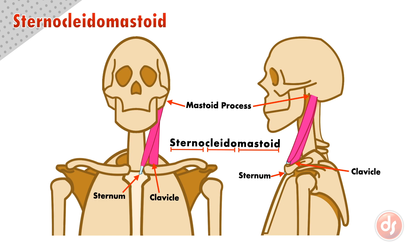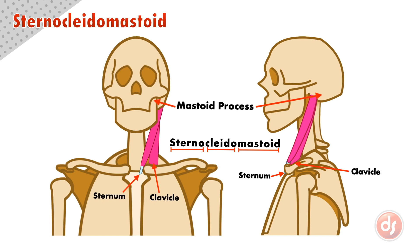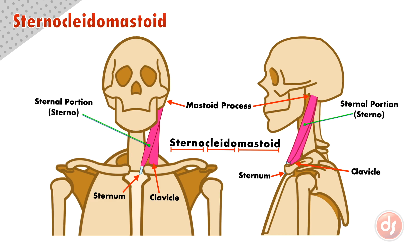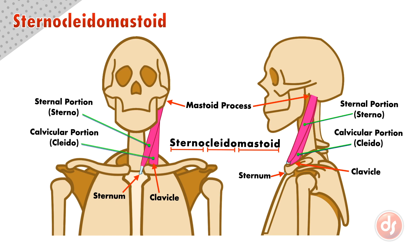Like most anatomy, it is named for its location, function, or shape. In this case, its location — from the sternum and clavicle to the mastoid process. This means we can call this the sternal portion, and this the clavicular portion.